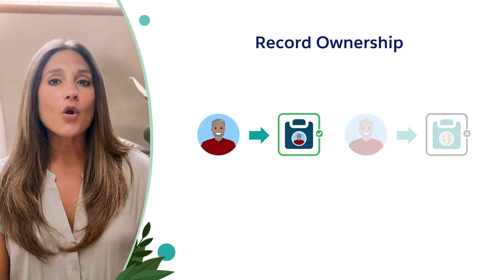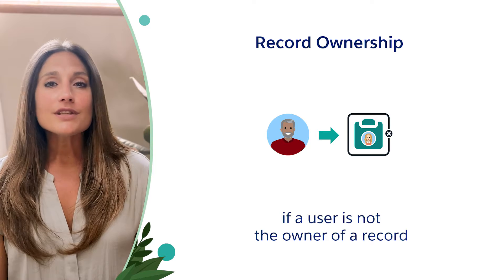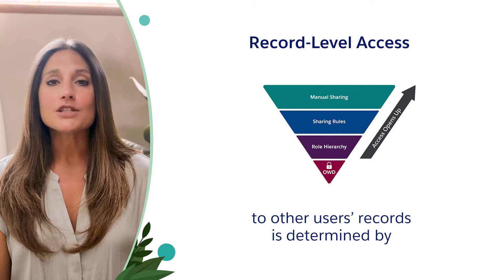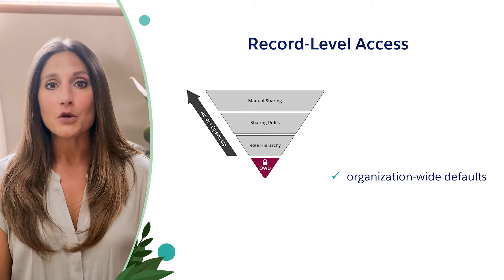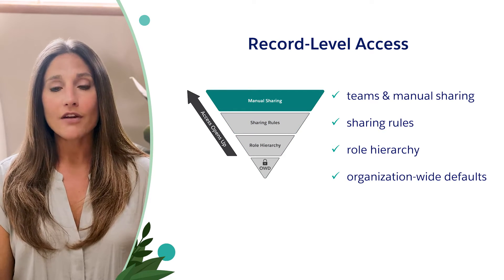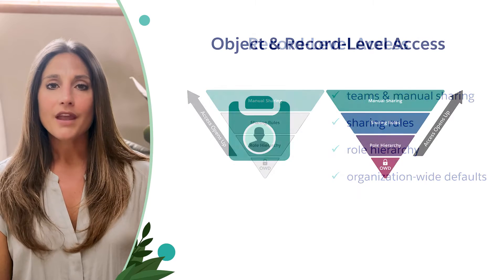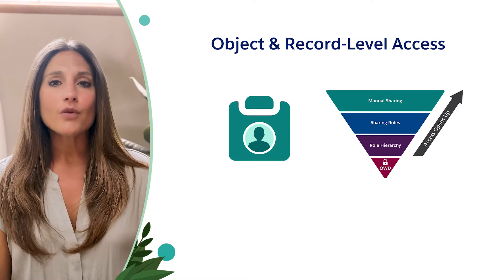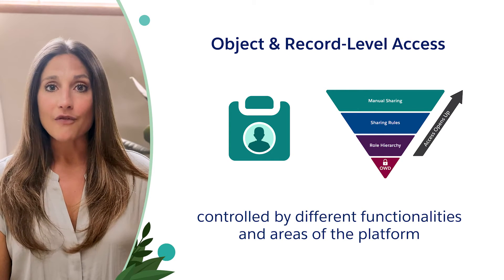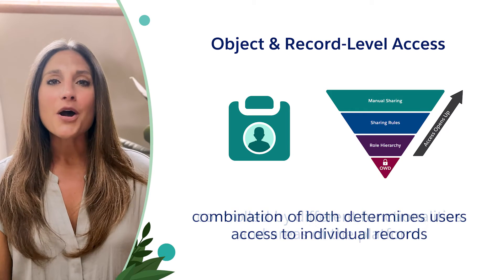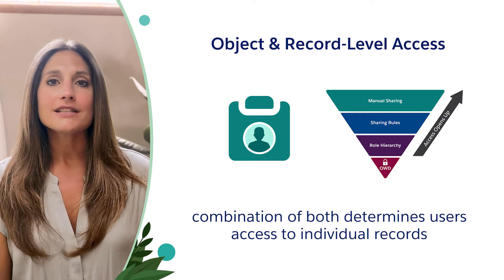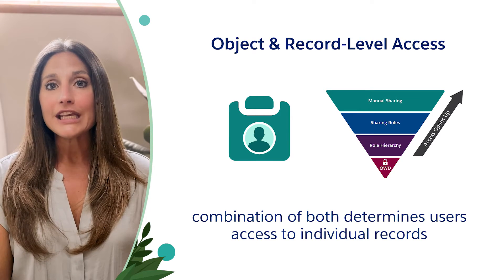A user is either the owner of a record or not. If a user does not own the record, record level access to other users' records is determined by the organization-wide defaults or OWDs, the role hierarchy, sharing roles, teams, or through manual sharing depending on an org's requirements. Object access and record level access is controlled by these different functionalities and different areas of the platform. However, it is the combination of object and record permissions that truly dictates what a user has access to on individual records.